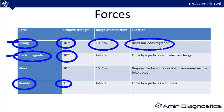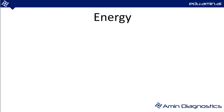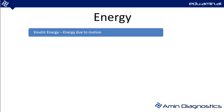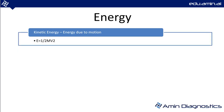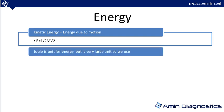Kinetic energy is the energy due to the motion of any object and is given by ½mv², where m is mass and v is velocity. Joule is the unit for energy, as seen previously, and watt is the unit for power.